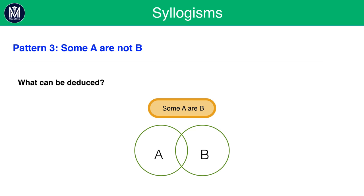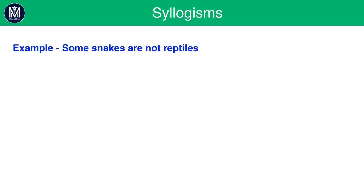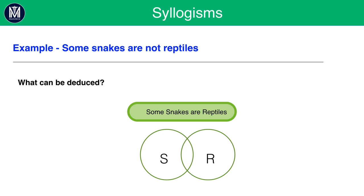Pattern 3: 'Some A are not B.' For some A to not be B, there must also be some A that are B — the statement implies this. The Venn diagram for 'some A are not B' looks the same as for 'some A are B,' because that's actually the only possible conclusion: some snakes are reptiles. Any other conclusion is only potential, and whenever a conclusion is only potential we put 'no.' A conclusion can only follow if it is 100% correct.